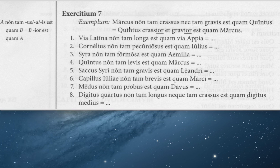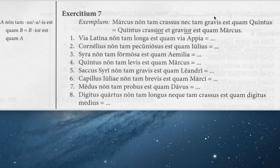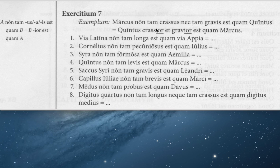This is a comparison. The example says, Marcus is not as big nor as heavy as Quintus. Non tam crassus, nec tam gravis est quam Quintus. Tam and quam mean 'as and as.' Therefore, Quintus est crassior et gravior quam Marcos — Quintus is bigger and heavier than Marcus.